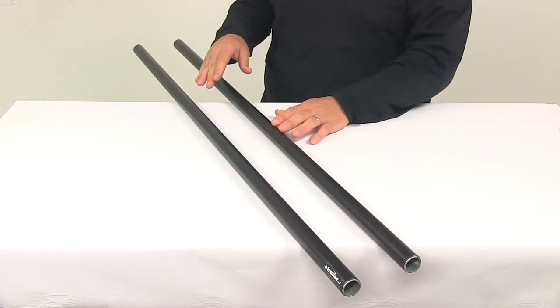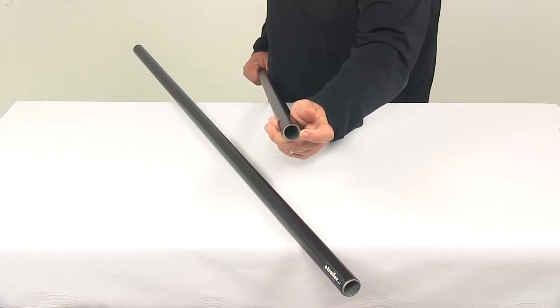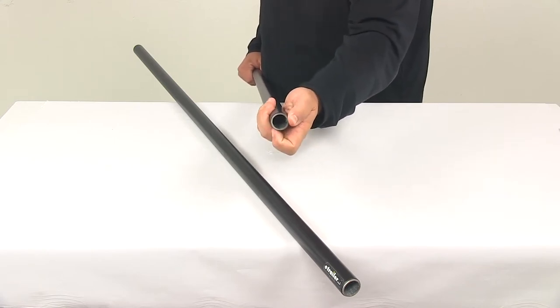Two bars are included. The bars measure one and one eighth of an inch in diameter with a steel wall thickness of .085 inches.